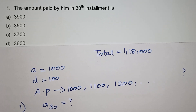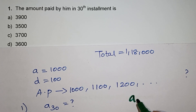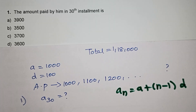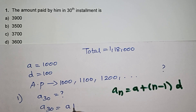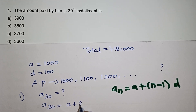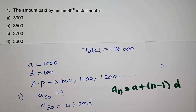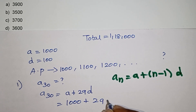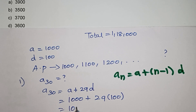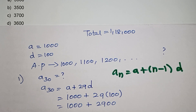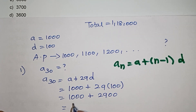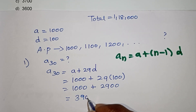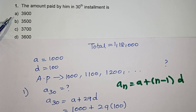We have the basic formula: AN = A + (N−1) × D. So A30 = A + (30−1) × D = 1000 + 29 × 100 = 1000 + 2900 = 3900. So 3900 is the correct answer, that is option A.